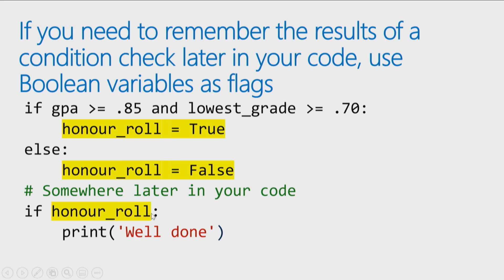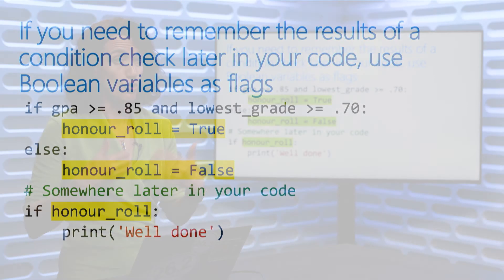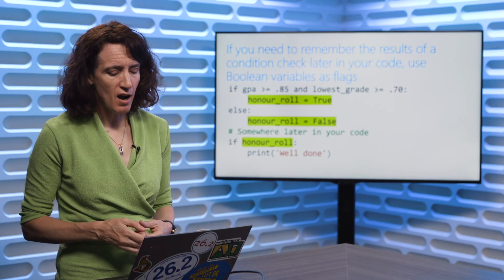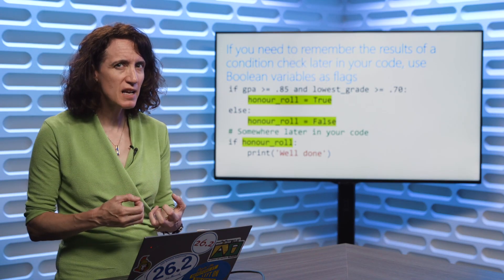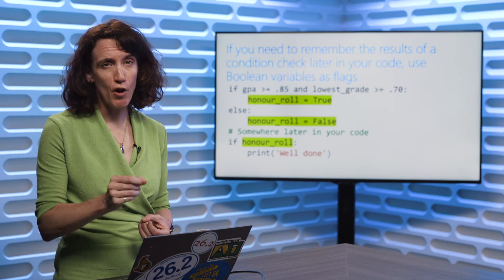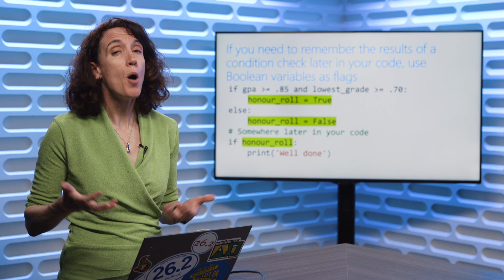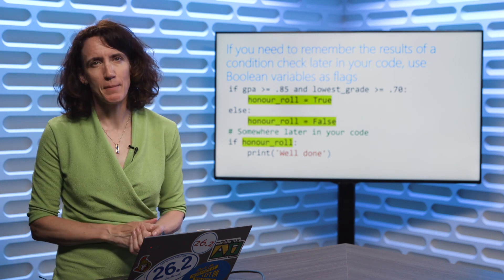By the way, you will sometimes see code that says, if honor_roll equals true. You don't need to do that in Python. It's actually frowned upon. You should just be saying, if honor_roll, because honor_roll in itself is true or false. So in terms of Python coding standards, you want to just say, if honor_roll, not if honor_roll equals true. Both will work, but this is the accepted convention.